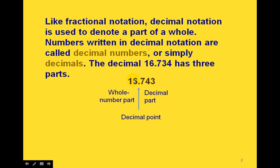The decimal 16.734 has three parts. The 16 is the whole number part, then we have the decimal point in the middle, and the 734 is the decimal part.